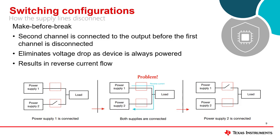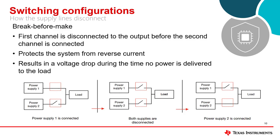There are two ways for the two supply lines to disconnect from the load. The lines can be in a break-before-make configuration or a make-before-break configuration. In a make-before-break, the second channel is connected to the output before the first channel is disconnected. As shown in the figure, this results in an issue of reverse current since both supplies are connected to the output at the same time. Instead, you can use a break-before-make configuration to ensure no reverse current flows through the device.